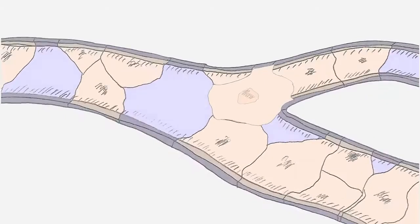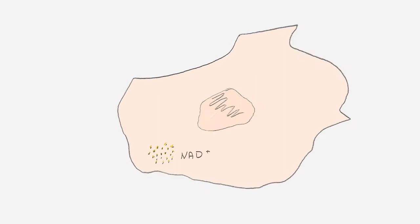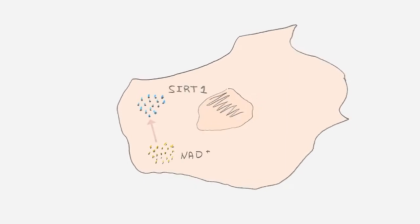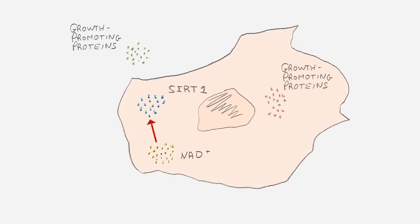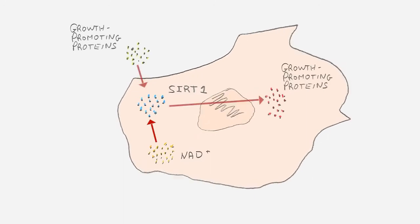The two key players in the crosstalk between blood vessels and muscles are a molecule called NAD and a protein called SIRT1. NAD boosts SIRT1, which in turn enables the conversation between muscles and blood vessels.